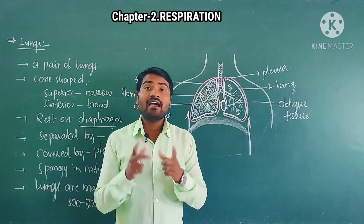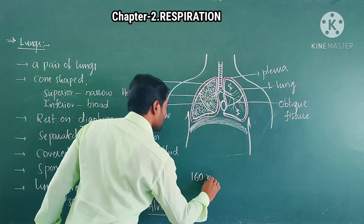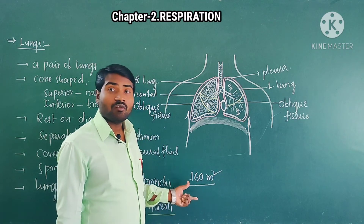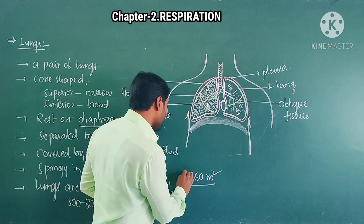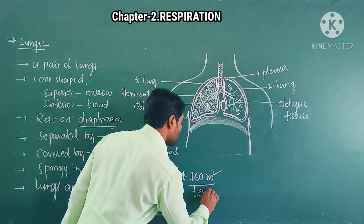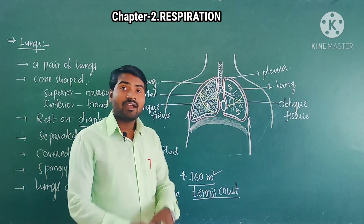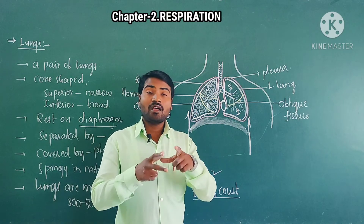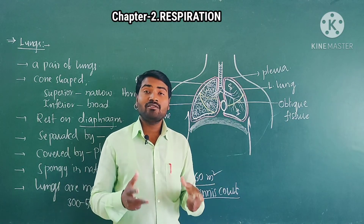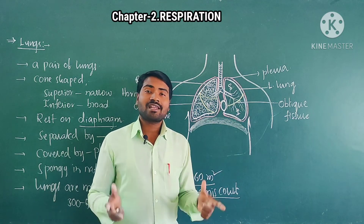The alveolar surface can occupy about 160 square meters of area, which is equal to a tennis court. This is about the structure of the lungs.